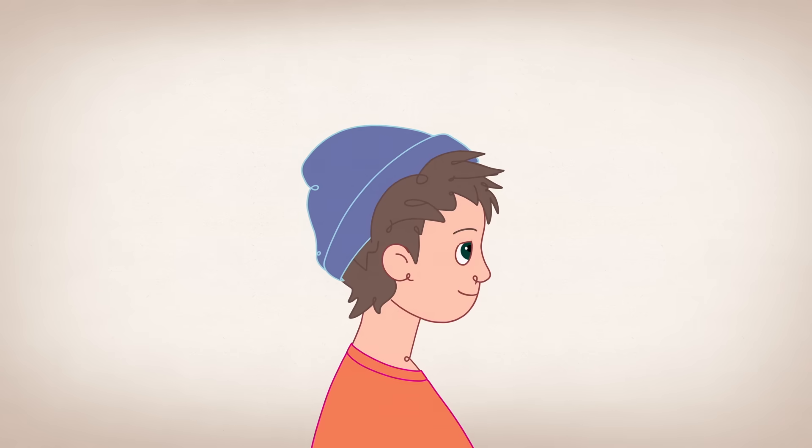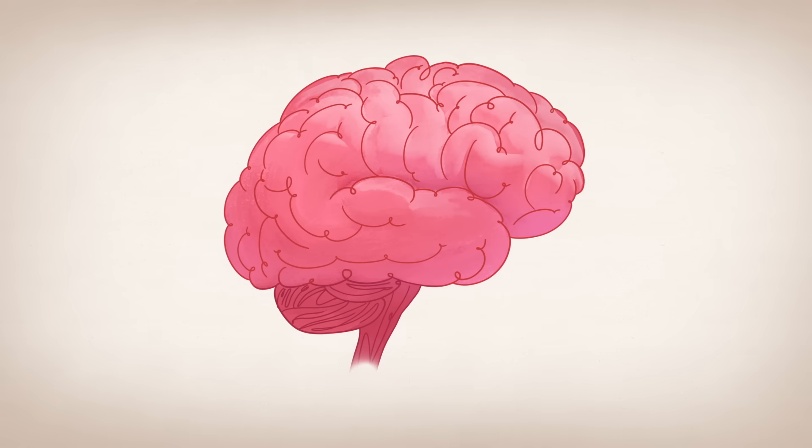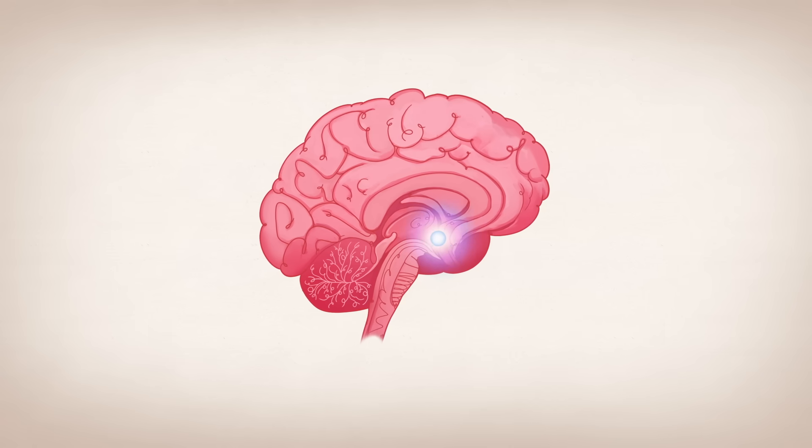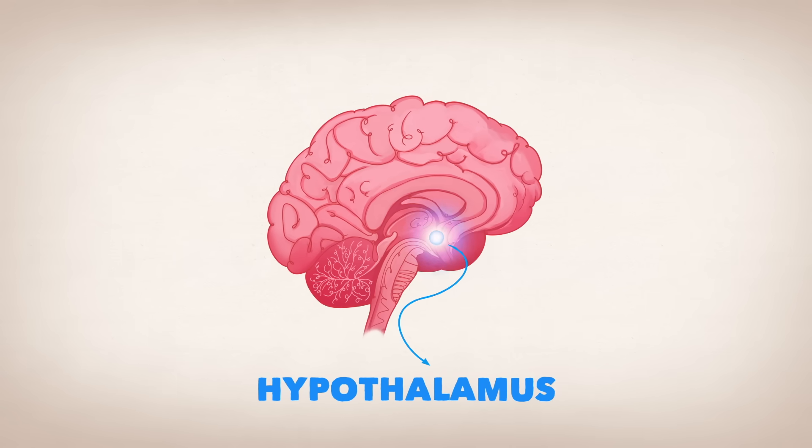Puberty, in fact, begins in the brain. At some point, usually between the ages of 9 and 14, puberty is triggered when a region known as the hypothalamus releases waves of a specialized hormone.